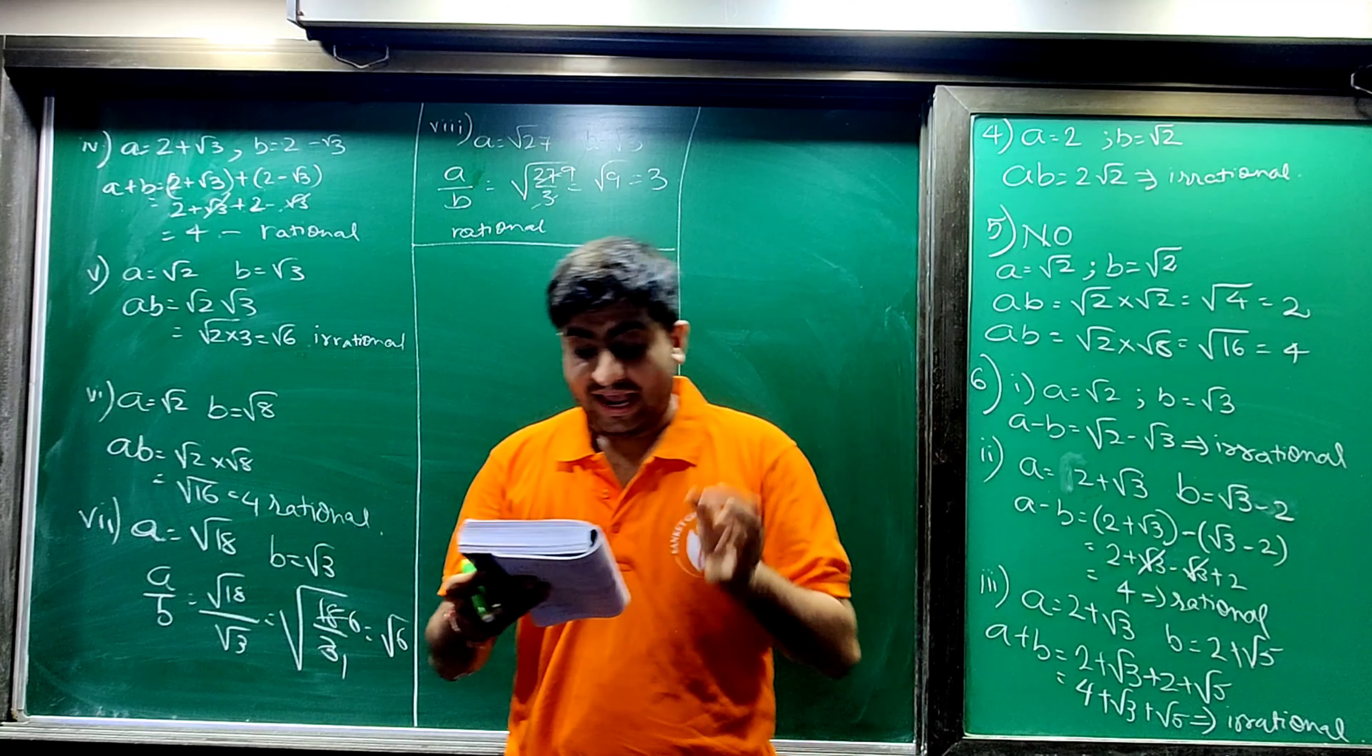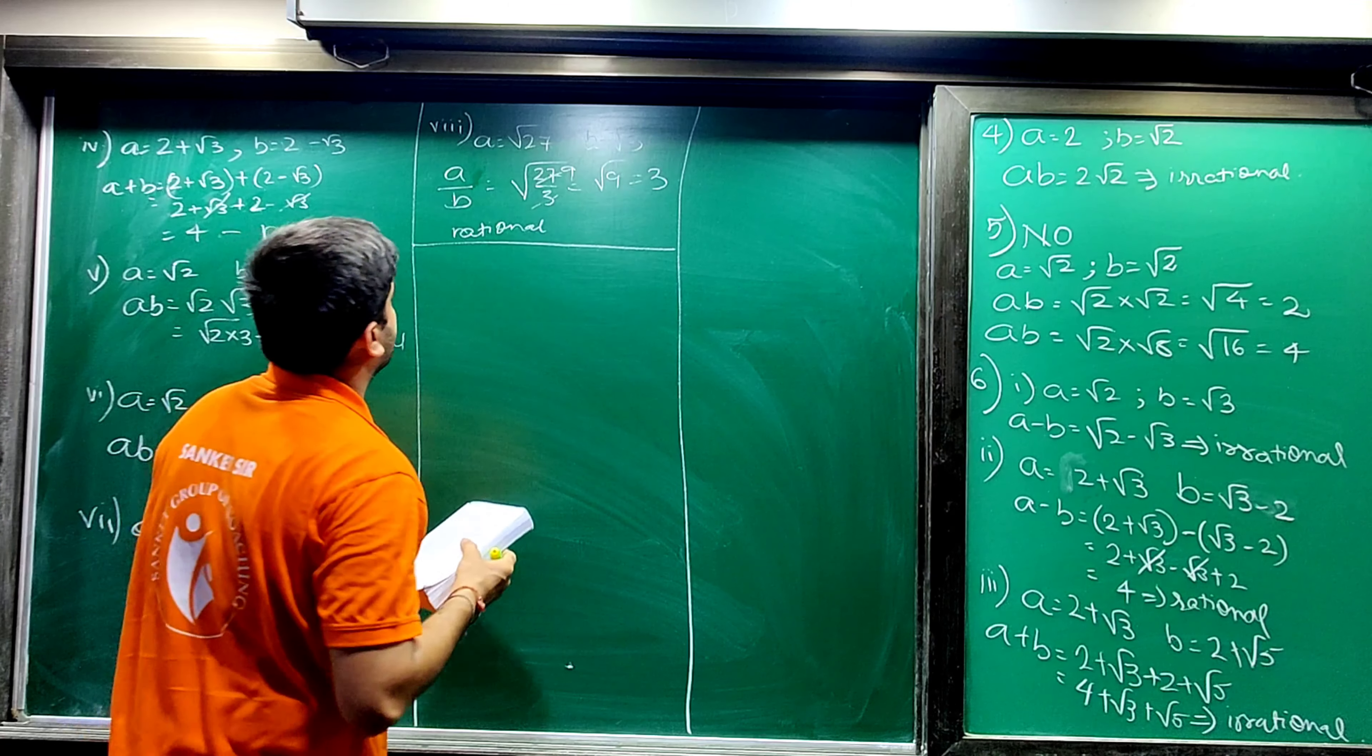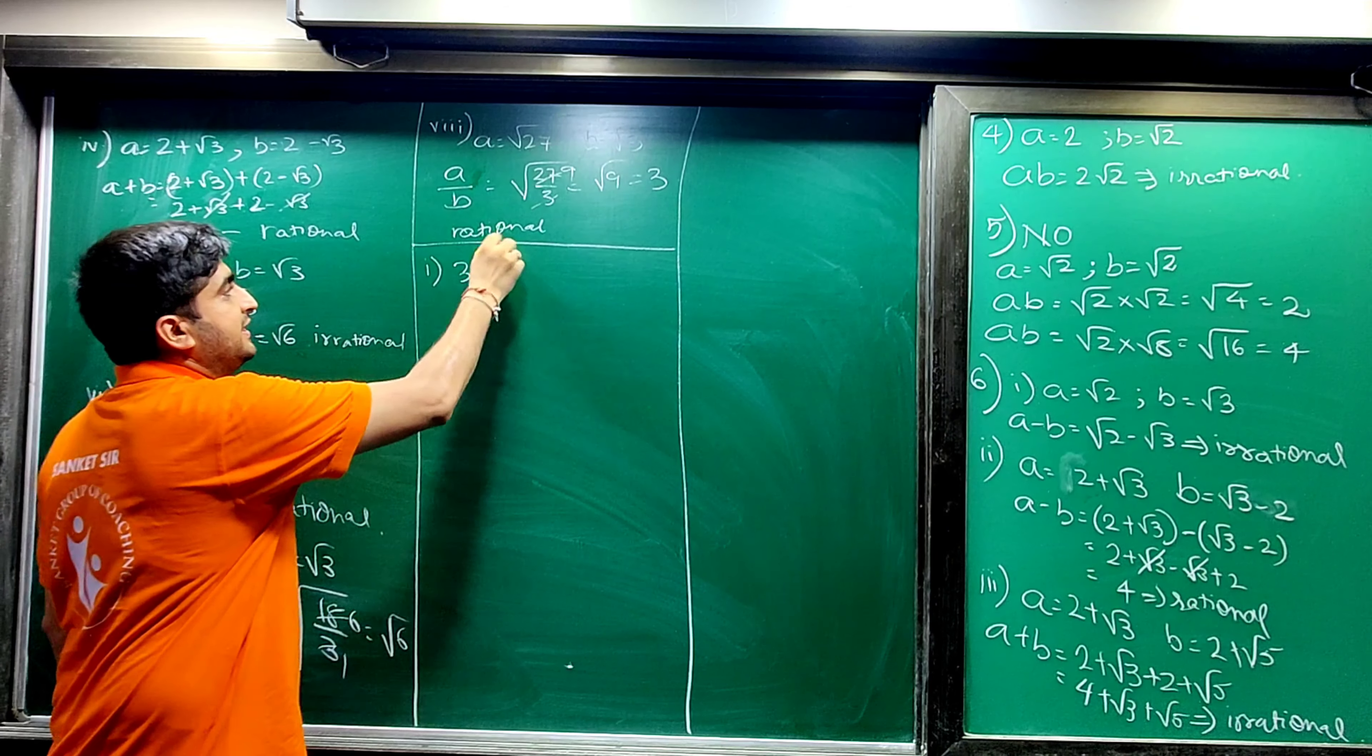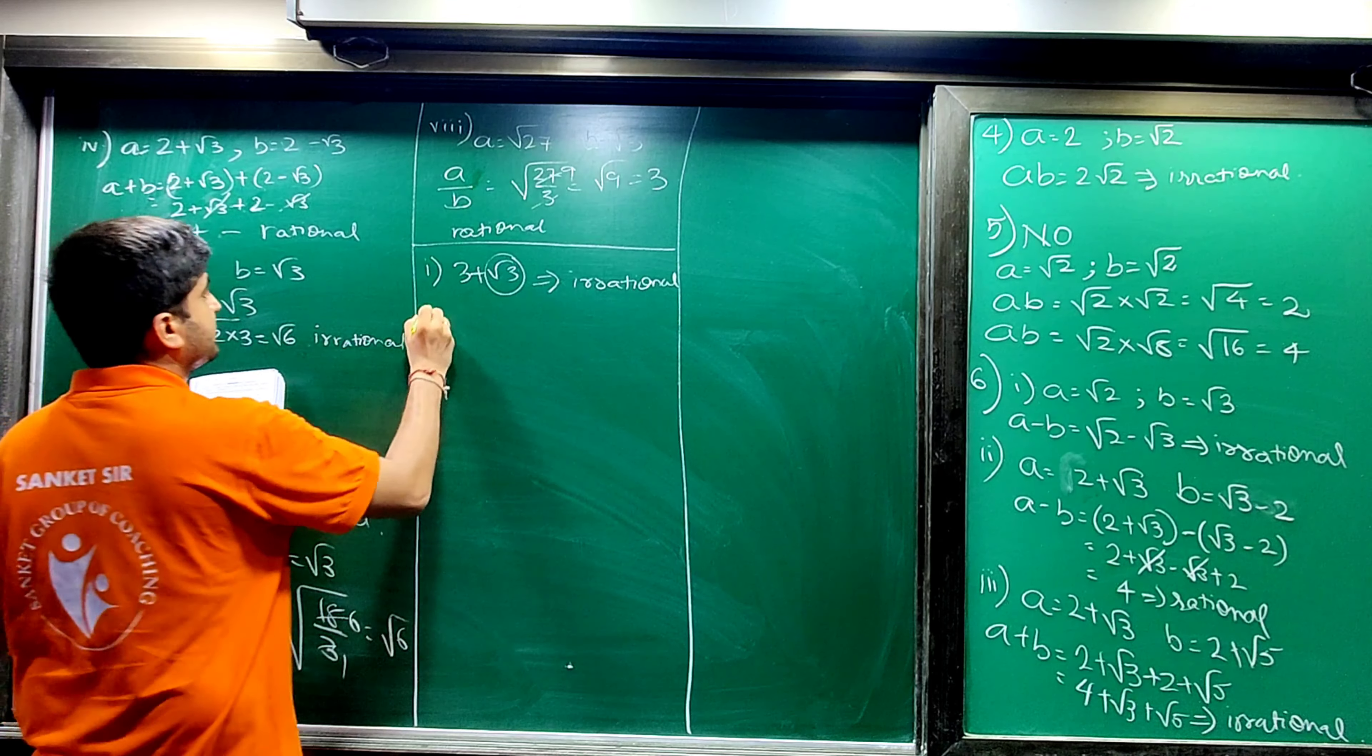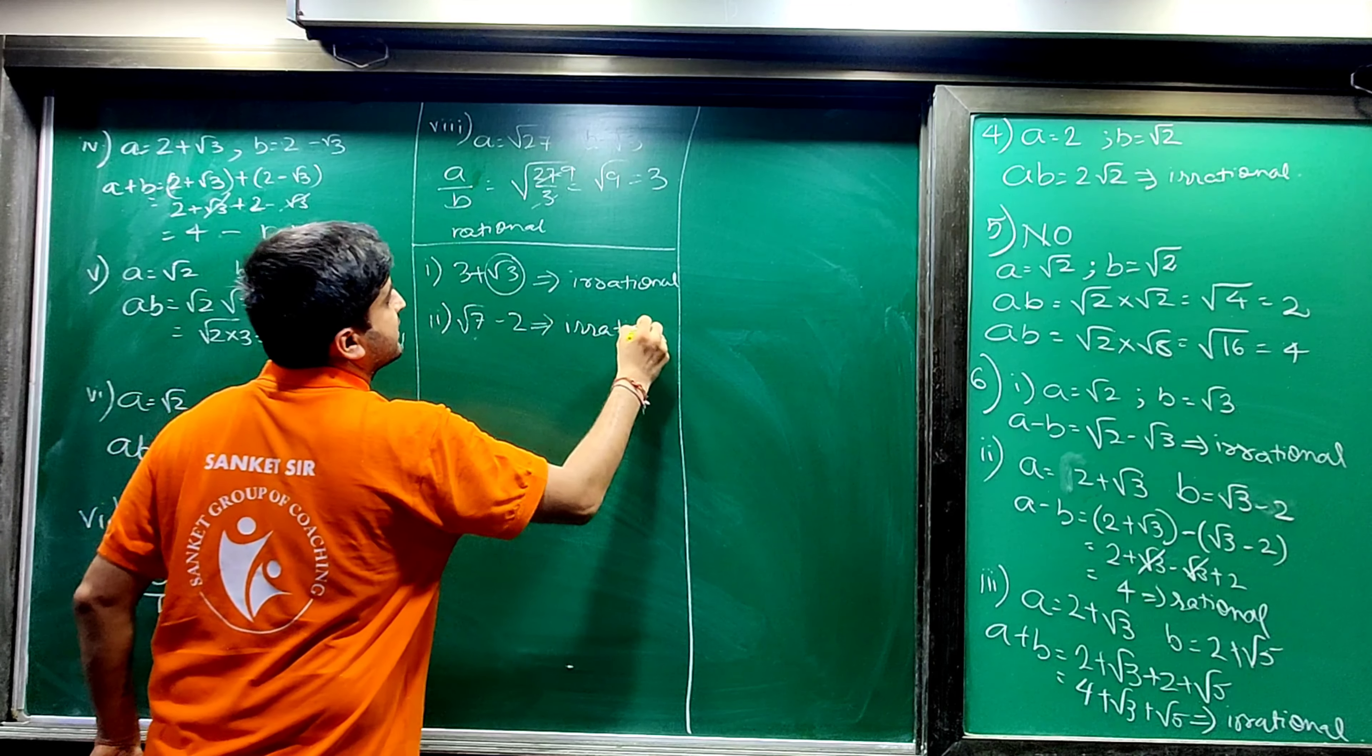Moving ahead, last major 7 sum: examine whether the following numbers are rational or irrational. First: 3 plus root 3. This is 3 and this is root 2, this is irrational. So answer: addition of 2 numbers will be irrational. Next is root 7 minus 2. This is irrational, this is rational, and that will be answer irrational.